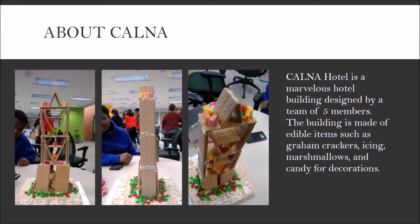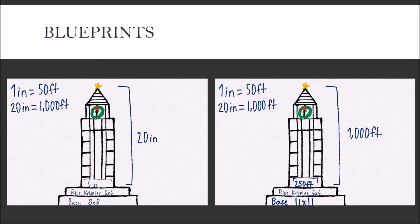Calna Hotel is a marvelous hotel building designed by a team of five members. The building is made of edible items such as graham crackers, icing, marshmallows, and candy for decorations.